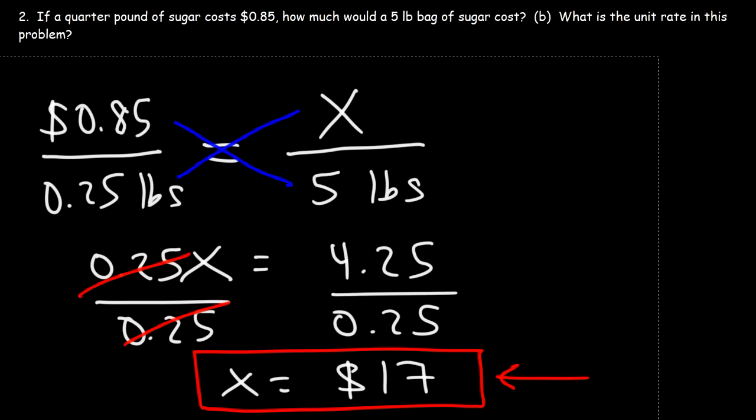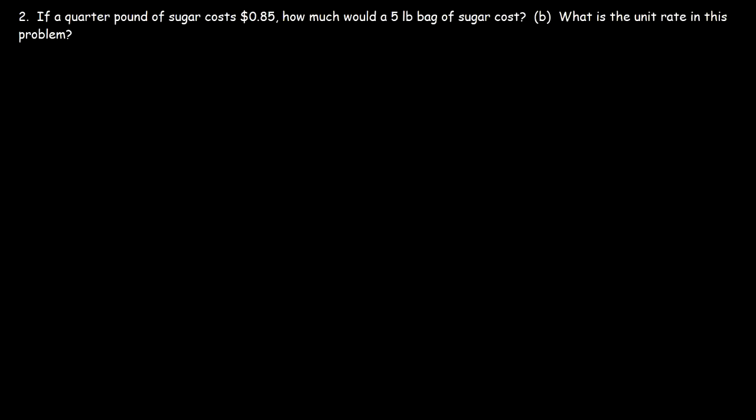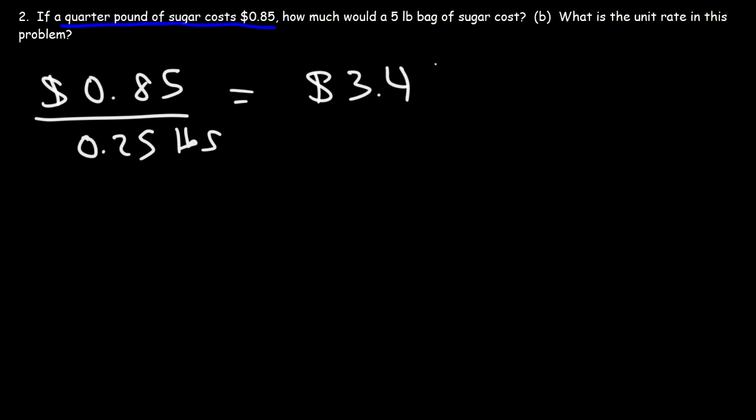Now what about part B? What is the unit rate in this problem? So basically, what is the cost of sugar per one pound of sugar? All we need to do to get the answer is simply divide the cost by the pounds. Now you might be wondering, which numbers should I use? And it really doesn't matter which set of numbers you use, as long as they correspond to each other. For example, we could use the information here because they correspond to each other. So I can take the cost of 85 cents and divide it by a quarter pound, or 0.25 pounds. And this will give me the unit rate, the cost per one pound of sugar. So 0.85 divided by 0.25, that's going to give me $3.40 per pound of sugar.